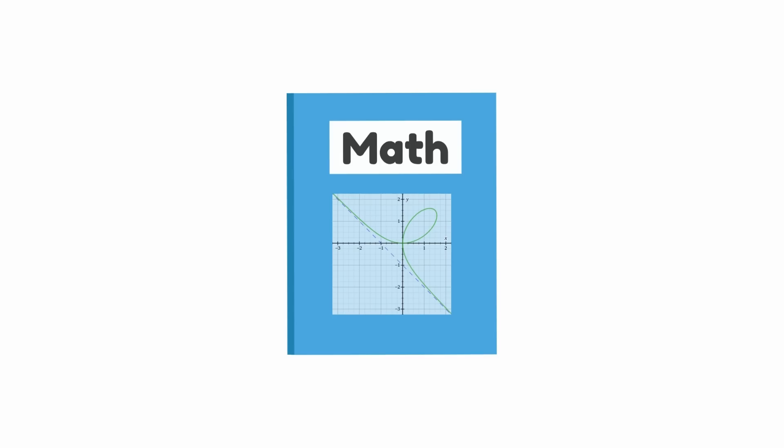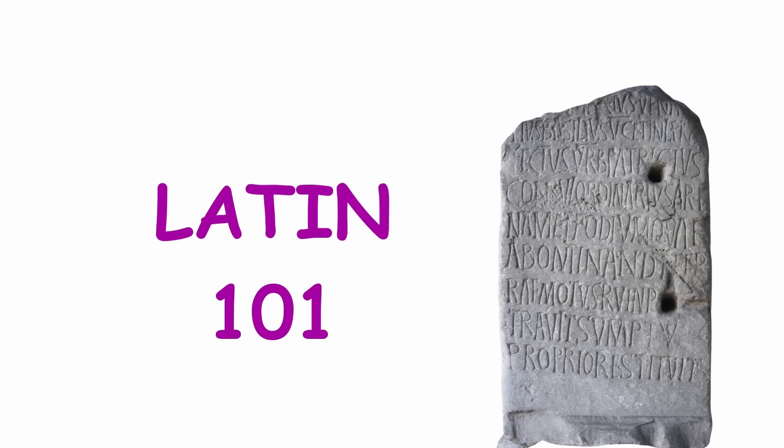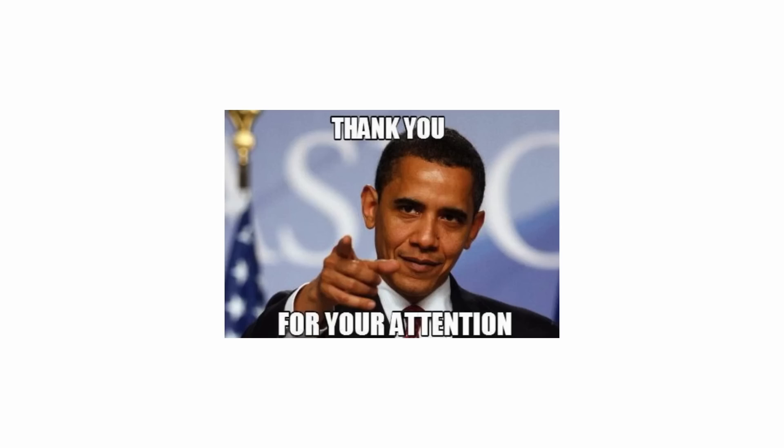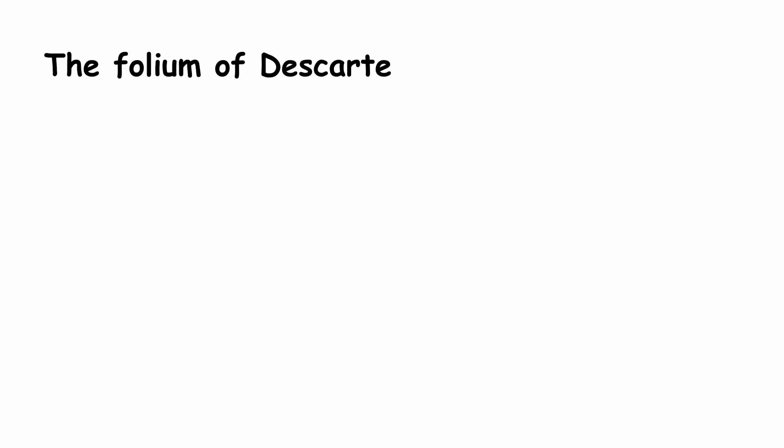Folium of Descartes. Here's a Latin language lesson. The Latin word folium means leaf. That concludes our Latin language lesson. The folium of Descartes is given by the equation x cubed plus y cubed minus 3axy equals 0, for some value A.